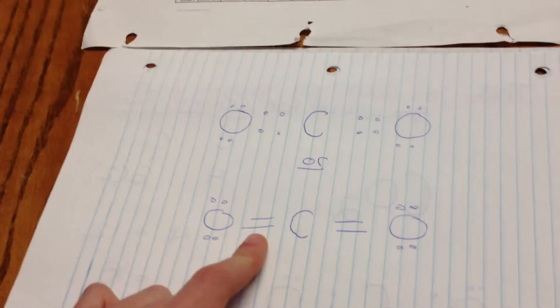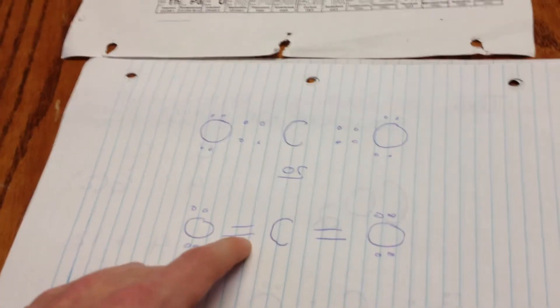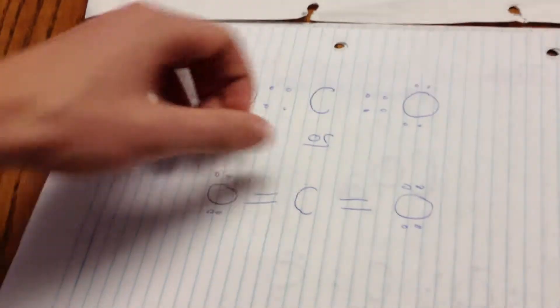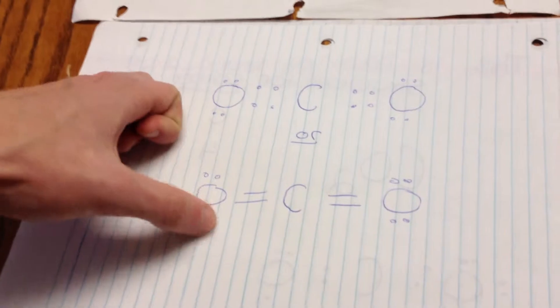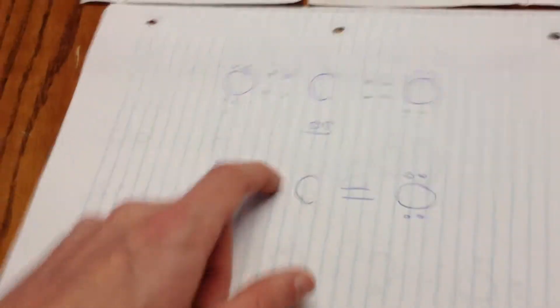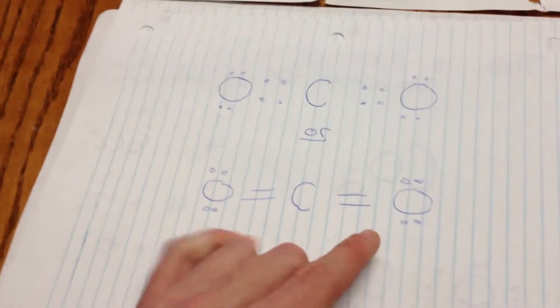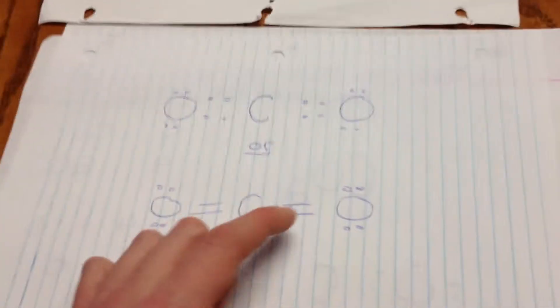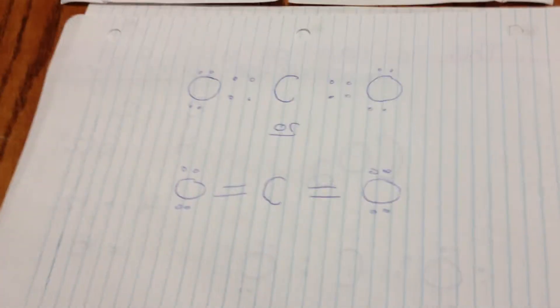Each line represents two valence electrons. So once again, oxygen would have two, four, six, eight, because there's two lines here. Carbon would have two, four, six, eight, because there's four lines around it. And the second oxygen would have two, four, six, eight, because of the two lines. Awesome.